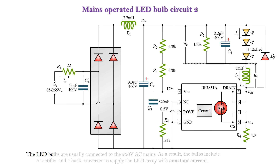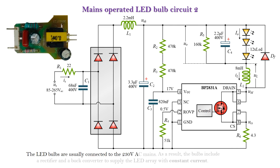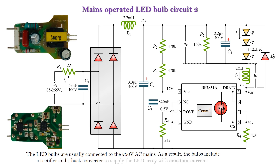The LED bulbs are usually connected to the 230V AC mains. As a result, the bulbs include a rectifier and a buck converter to supply the LED array with constant current.